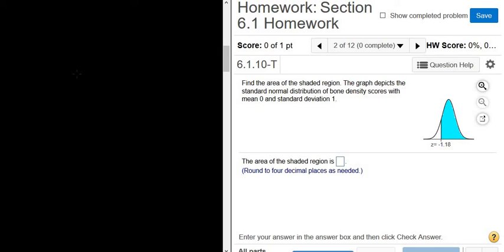So we have this curve here. I'm going to draw it over here. Looks like this. And then here we have negative 1.18. And over here, we have this blue shaded region. And the question is to find the area of the region.